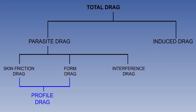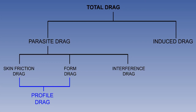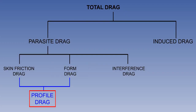This final lesson in the series on drag consists of a summary of the main points. As a reminder of the divisions of drag, here is the family tree. Parasite drag is made up of skin friction drag, form or pressure drag, which together are known as profile drag, and interference drag.